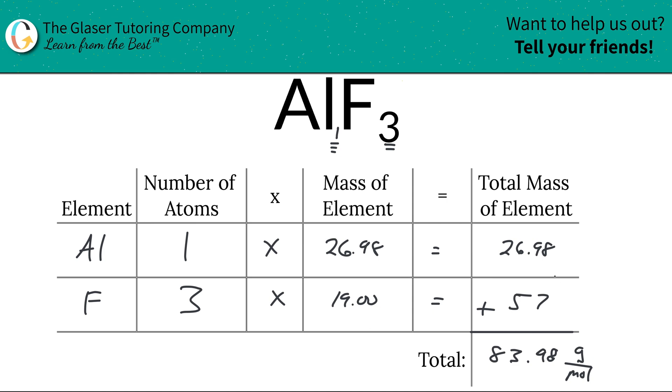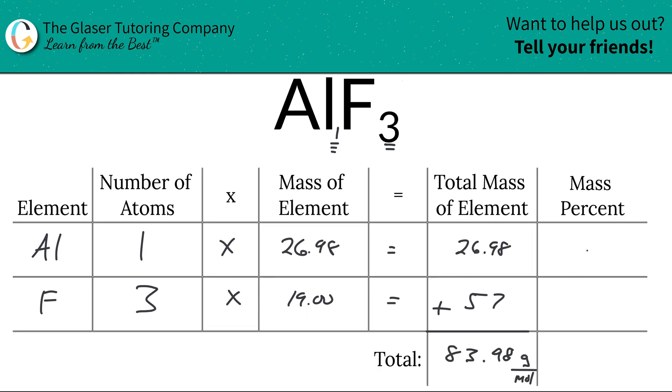So let's add in a new column to our table. Now since we're calculating the mass percent for aluminum, all we simply do is take the total mass of that particular element in the compound, which was 26.98 (and you can call it grams per mole, it really doesn't matter, just use the number), and then we're going to divide it by the total mass of the entire compound. That's a basic percentage, right? Part over whole.